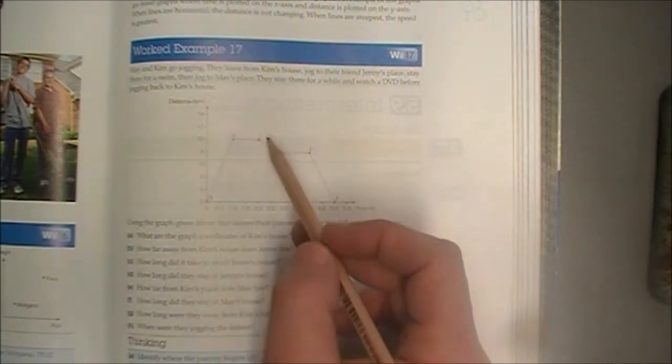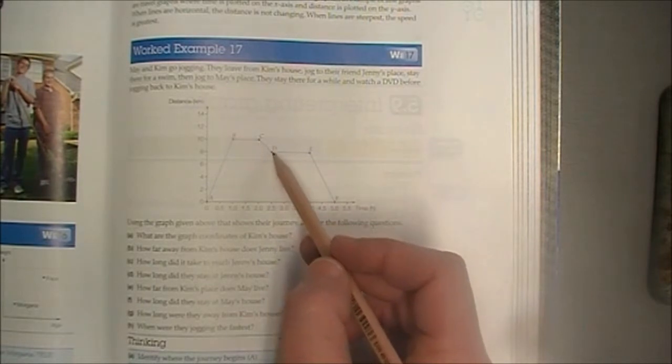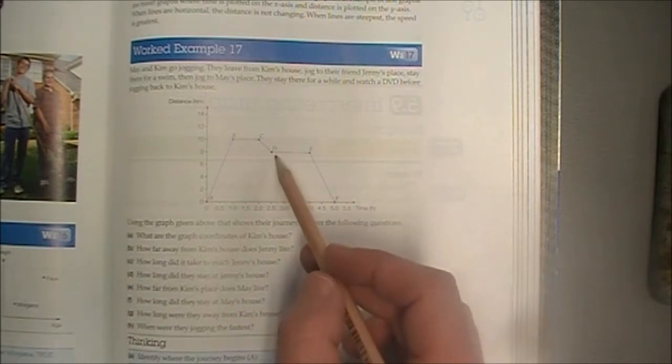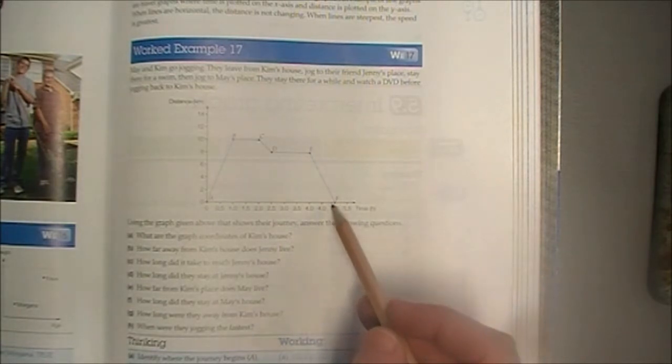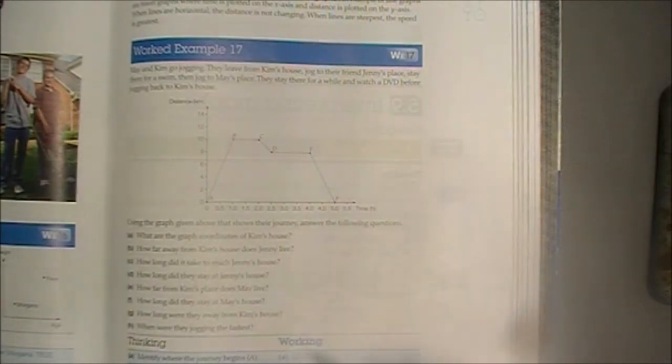Then they jog to May's place, so they're obviously jogging back closer to Kim's house, because it's less distance away. They stay there and watch a DVD for a while, that's from D to E. And then they jog back to Kim's house, and it takes them that long to jog back, and they're back at Kim's house.